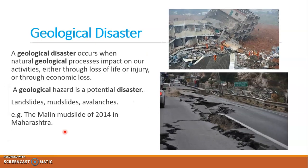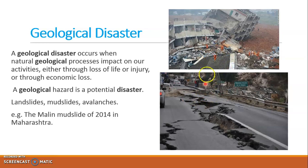The next disaster is geological disaster. Geological disasters occur when natural geological processes impact human activities, either through loss of life and injury or through economic loss. You can see here an example of a landslide or mudslide — there is loss of life, injuries, economic loss, and loss of settlements and property. Examples are landslides, mudslides, and avalanches. The Malin landslide of 2014 in Maharashtra is an example of a geological disaster.